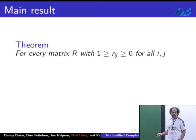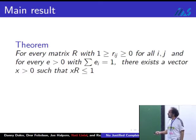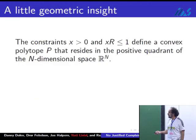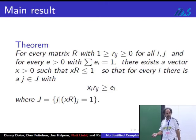Here is a theorem. The theorem is that such a solution always exists. Give me a matrix of r_ij which are between zero and one. Give me entitlements which are positive and add to one. Then there exists a vector x that's positive such that xR is less than or equal to one, so that for every i, there is a bottleneck index for which x_i times r_ij, how much user i is receiving from resource j, is at least this user's entitlement and where j is bottleneck. That's the main theorem.